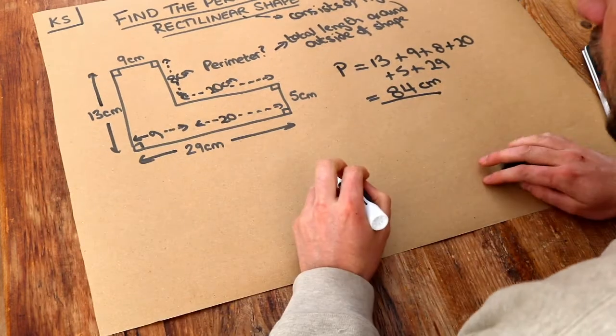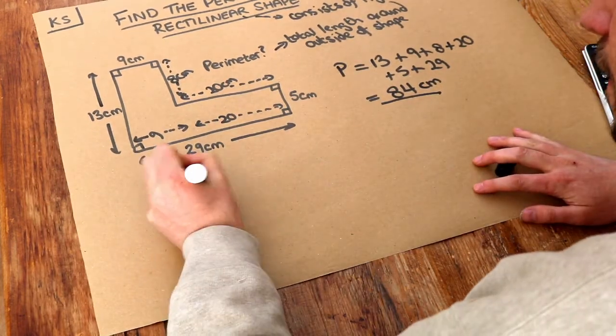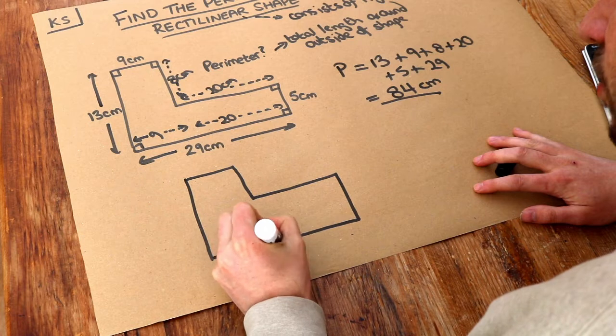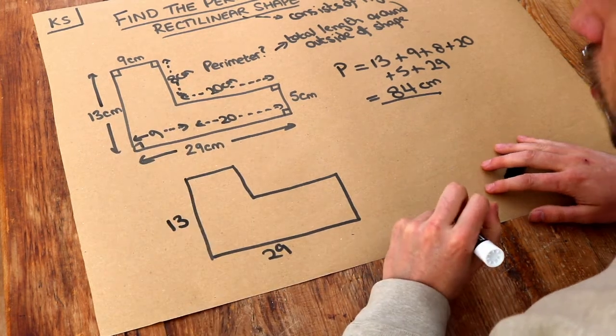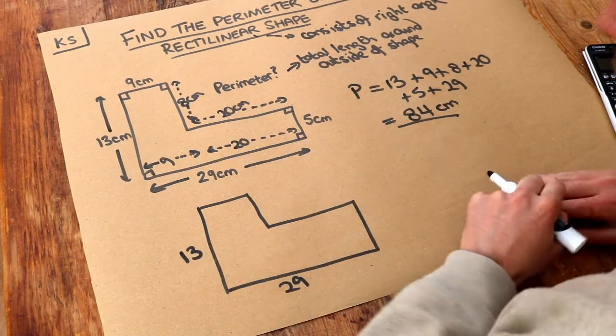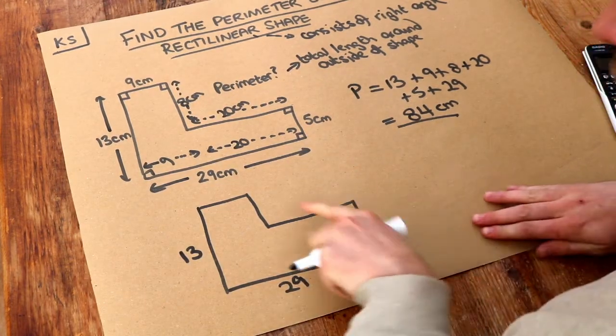Now, there is another way of doing this. If I just draw this again, kind of a secret method, that was 29 and that was 13. Now, believe it or not, we don't actually even need the 9 or the 5 to work out the total perimeter of this.